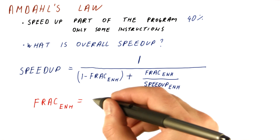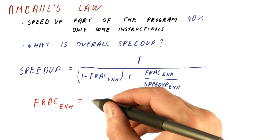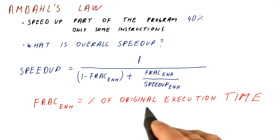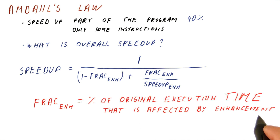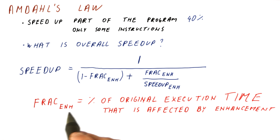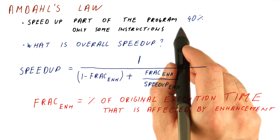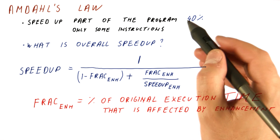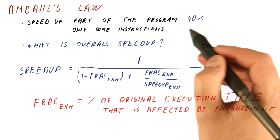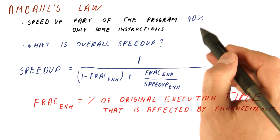It's very important to understand that the fraction enhanced here is a percentage of the original execution time that is affected by our enhancement. So it needs to be that 40% of the time spent on the program is affected by our speed up — not, for example, 40% of the instructions in the program or something else other than the time.